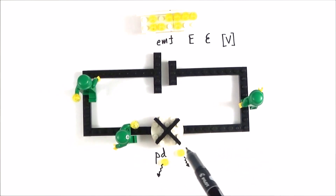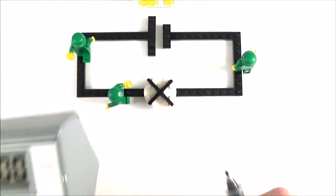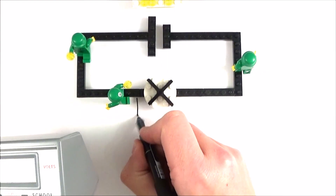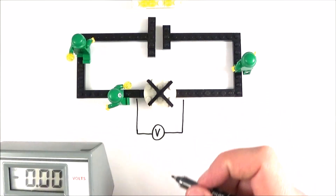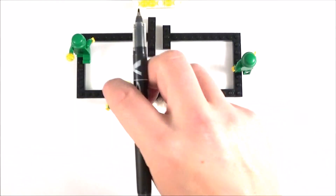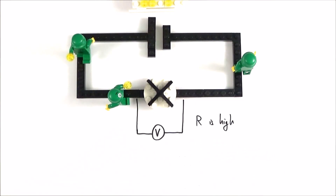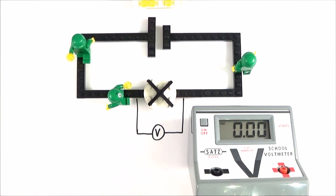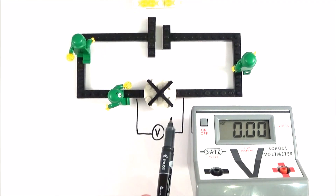The current will still flow — the charges still move around the circuit, transferring energy from one place to another. To measure the potential difference, we use a voltmeter. A voltmeter must go in parallel with the component we're measuring, because we want to look at the difference in electrical potential on either side. It has a very high resistance so that virtually no current flows through it — we want all the current going through the component. The voltmeter goes across the component to measure the potential difference in volts. This is very different to an ammeter, which goes in series and measures the current through a position, whereas a voltmeter measures the difference in electrical potential across a component.